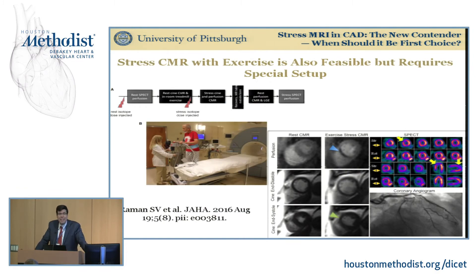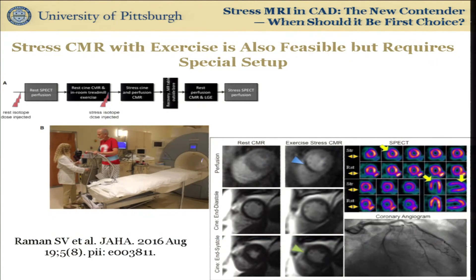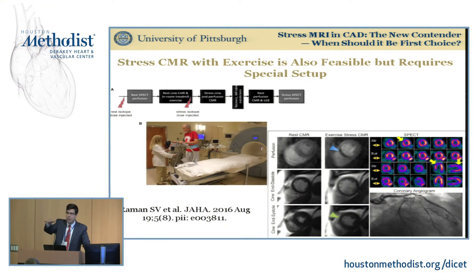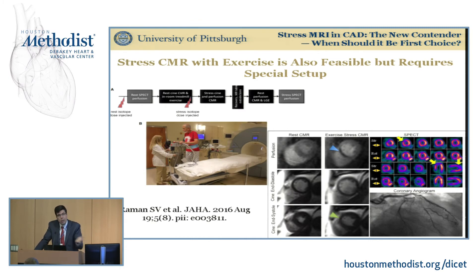Stress CMR with exercise has also been attempted and shown to be feasible, but it requires a special setup. This was a trial we participated in along with a group at Ohio State University. A hydraulic treadmill with no ferromagnetic parts is used — all powered by hydraulics. The patient lies down on a specially molded mattress when finished with stress, then quickly gets into the magnet. The study authors showed that compared to SPECT, exercise CMR provides not only the prognostic information of exercise but also very good accuracy in the detection of coronary artery disease.